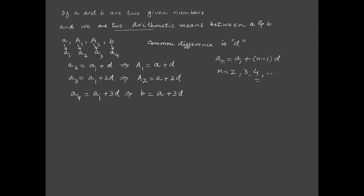We know the general formula for the nth term: an = a1 + (n-1)d. Putting n=2, we get a2 = a1 + d, so A1 = a + d. Putting n=3, we get a3 = a1 + 2d, so A2 = a + 2d. Putting n=4, we get a4 = a1 + 3d, and since the fourth term is b and a1 = a, we get b = a + 3d.